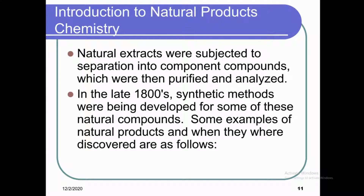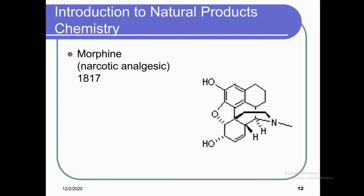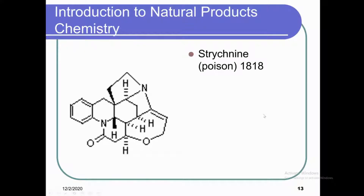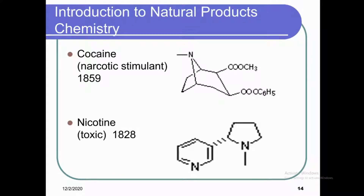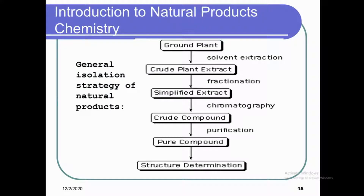In the late 1800s, synthetic methods were being developed for some of these natural compounds. Some examples of natural products and when they were discovered: morphine was discovered in 1817 and is used as a narcotic analgesic; strychnine, a poison, was discovered in 1818; cocaine, a narcotic stimulant, was discovered in 1859; and nicotine, which is toxic, was discovered in 1828.